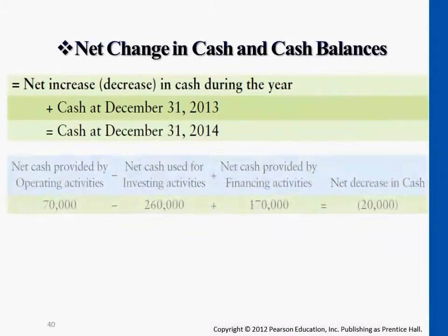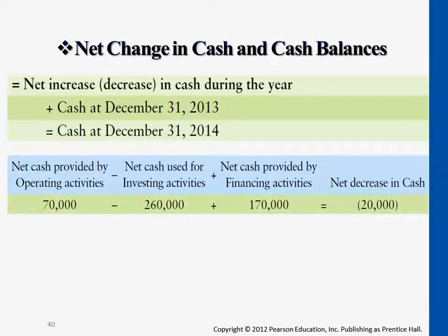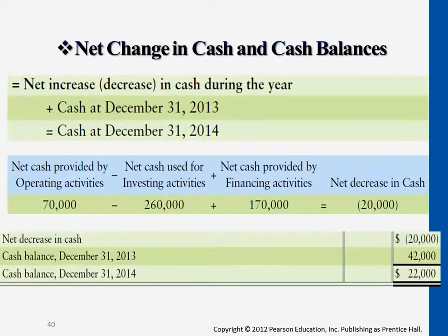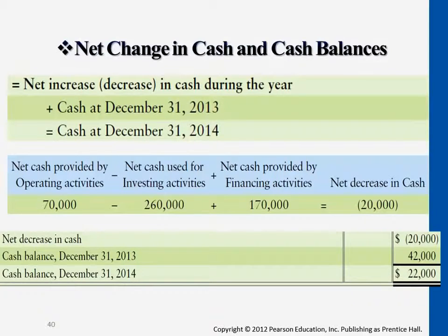Here's the last part here — net changes. I just enlarged it a little bit. Net changes in cash: operating $70,000, minus the investing activities — overall we lost $260,000. Plus any financing activities cash flow will give you the last part here: net cash decrease of $20,000. That's the major part we want to get to. The majority part — we lost a lot in the middle in investing activities, and we gained a lot in financing activities.